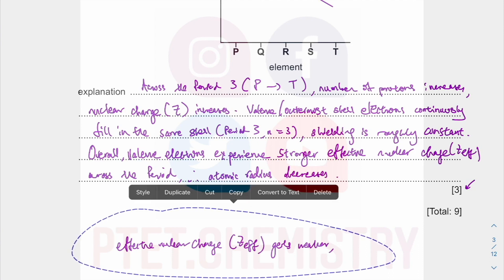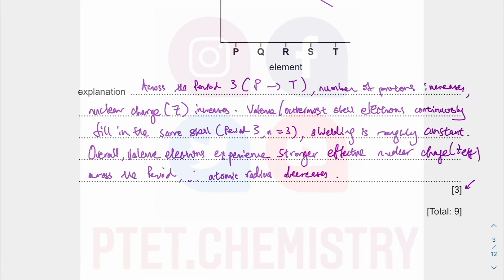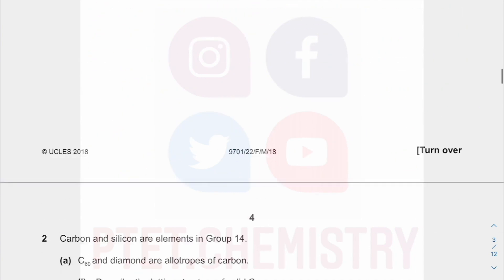decreases across a period. So pretty straightforward then. The idea about nuclear charge increasing, but shielding is roughly constant. Overall, you have a stronger pull, which is the net effect. And because of the nuclear charge, effective nuclear charge increasing, getting stronger, your atomic radius or your size gets smaller across the period.